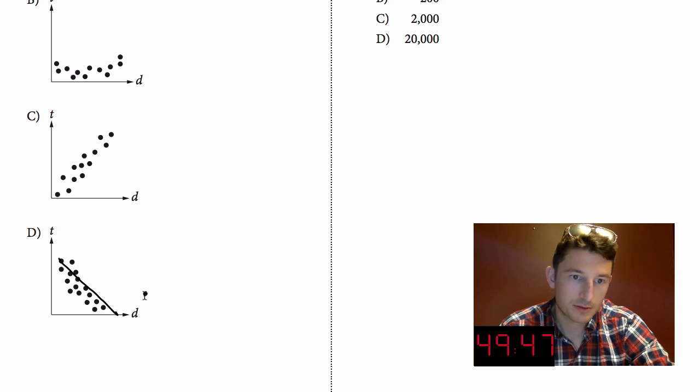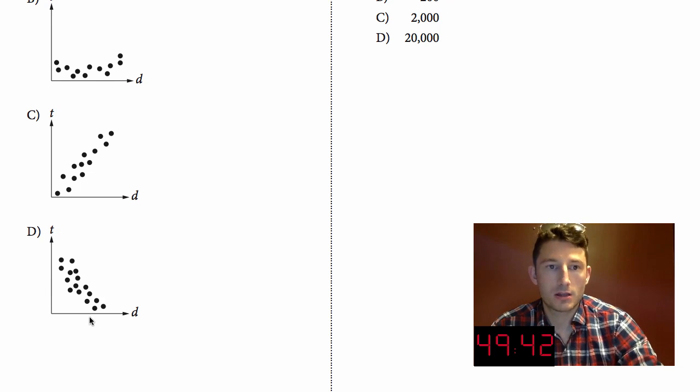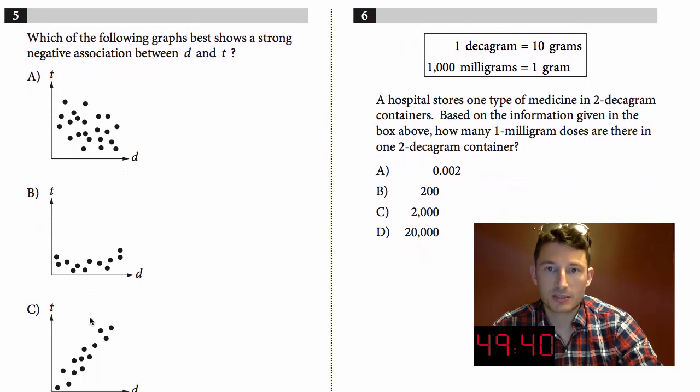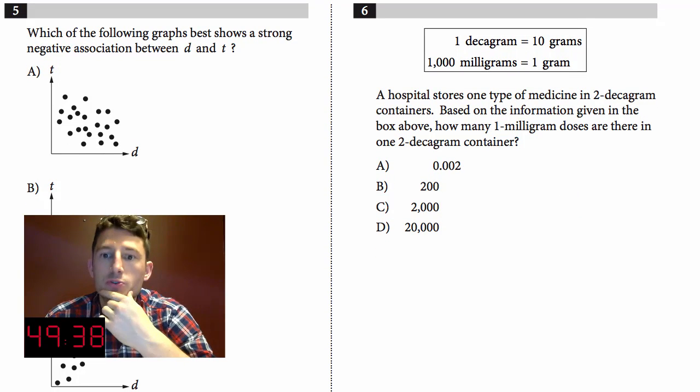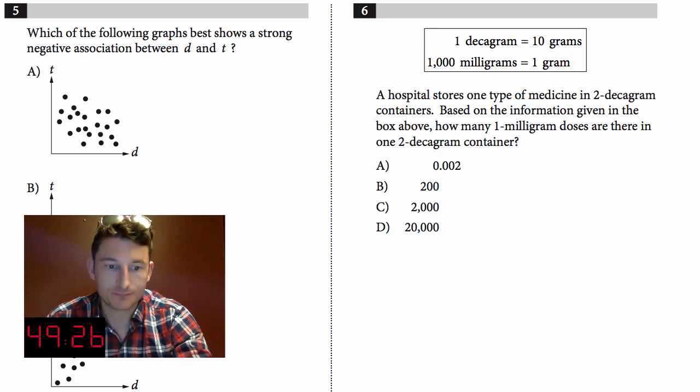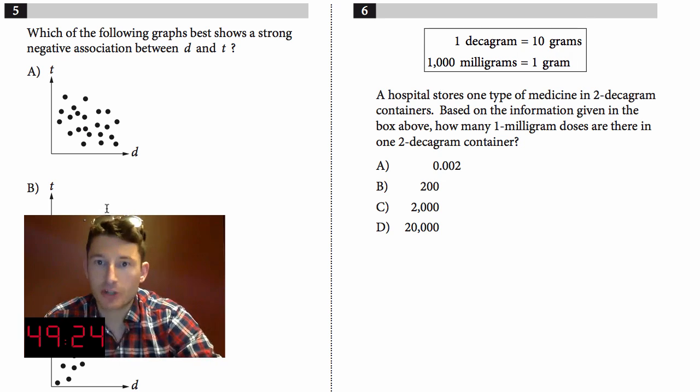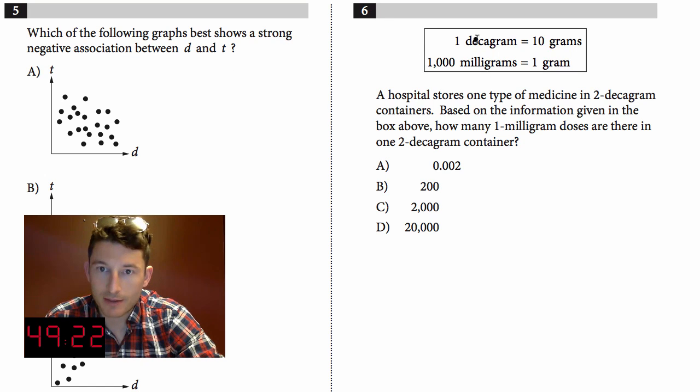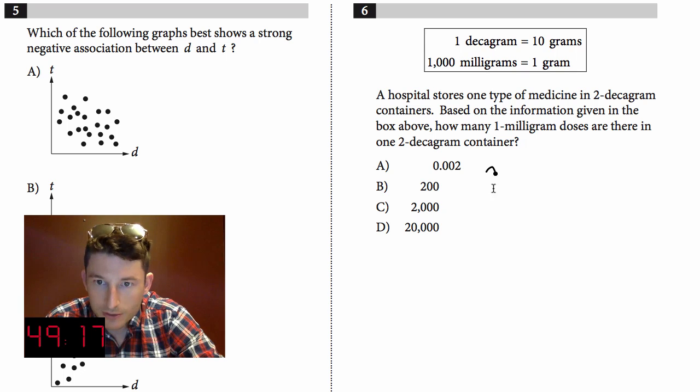Number six: A hospital stores one type of medicine in two-decagram containers. Based on the information given in the box above, how many one-milligram doses are there in one two-decagram container? It looks like they want us to go from decagrams to grams to milligrams.